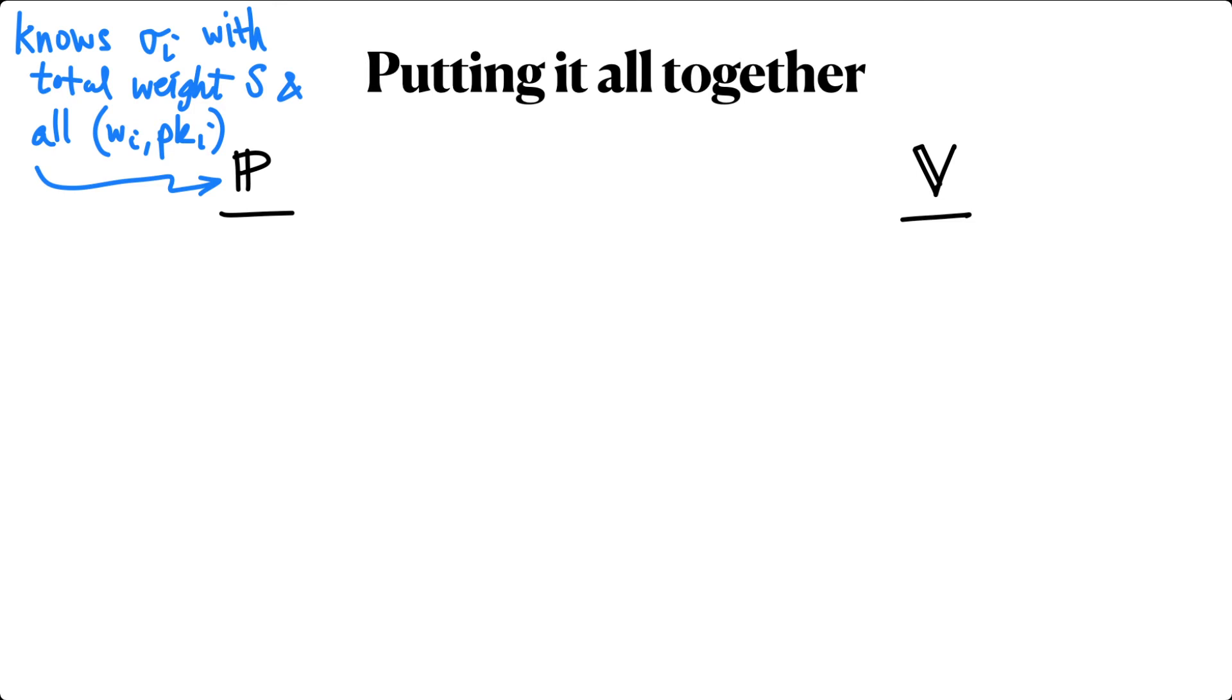Now we can write down the full protocol. The prover starts with knowledge of signatures having total weight at least S, and all of the attester's public keys and weights. The verifier knows the message to be signed, the root of the attester's tree, and the target weight T.